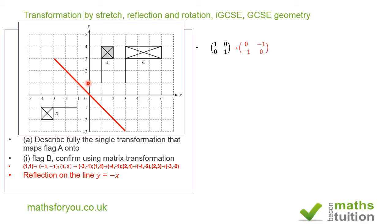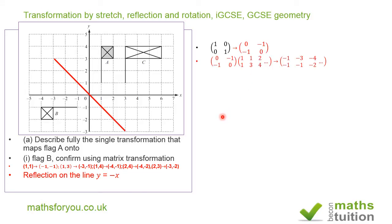After transformation by reflection on the line y = -x, the point (0, 1) moves to (-1, 0). So the matrix for reflection on the line y = -x maps these basis vectors accordingly. Multiplying that matrix by the coordinates of the object gives us the image coordinates, which confirms what we found earlier.